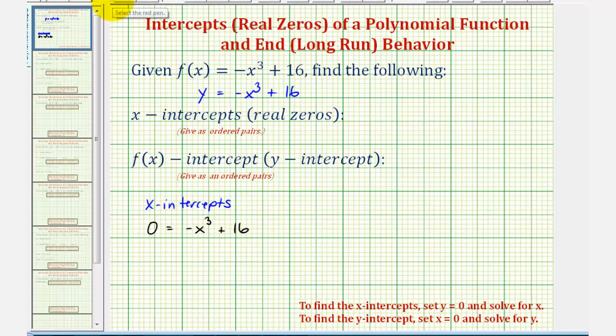Let's isolate the variable term by adding x cubed to both sides of the equation. So now we'd have x cubed equals, this would be zero, zero, so x cubed equals 16.